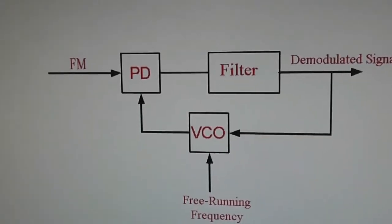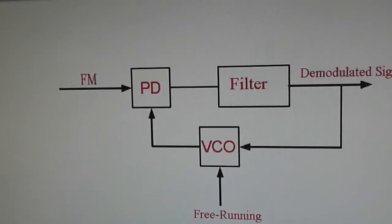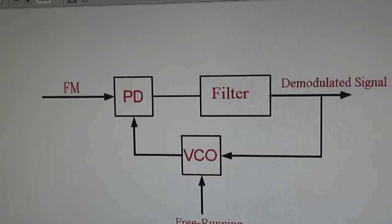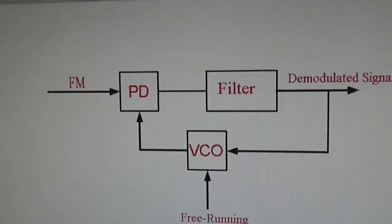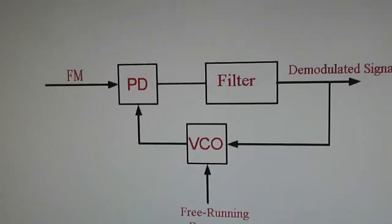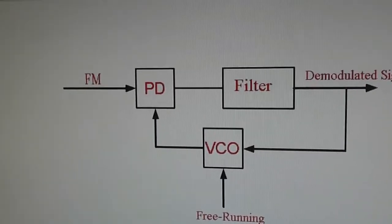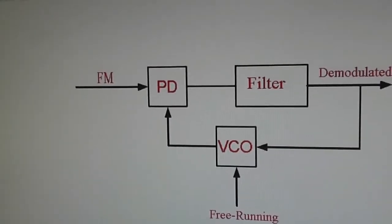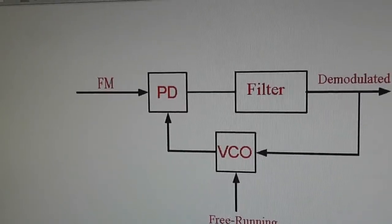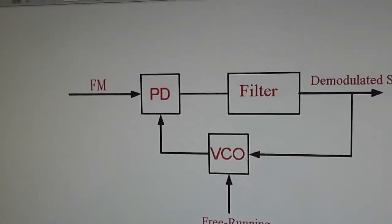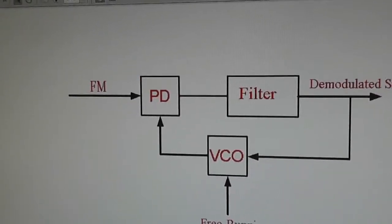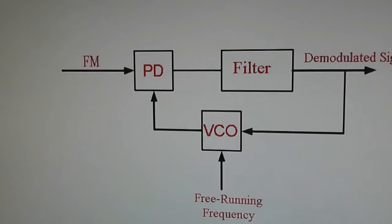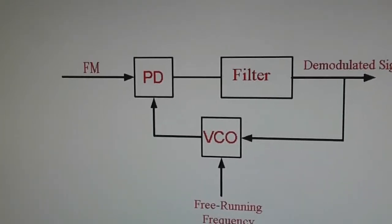So what is a phase-locked loop? A phase-locked loop is a little control system designed about the 1920s, I believe, by a Frenchman. It's got these component parts and applications in areas like wireless. One of the most common applications is demodulating frequency modulation, or FM modulation as it's commonly known.